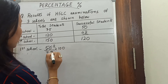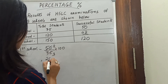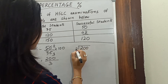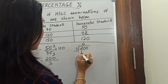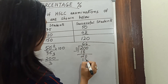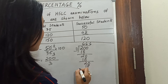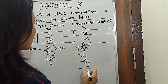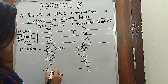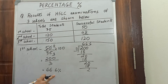Simplifying: 50 over 75 gives us 2 over 3, so 2 into 100 equals 200 divided by 3. Dividing 200 by 3 gives us 66.6 percent. So the first school got 66.6 percent.